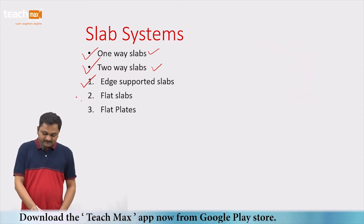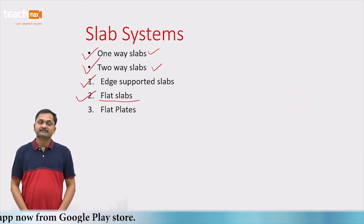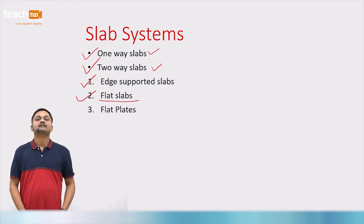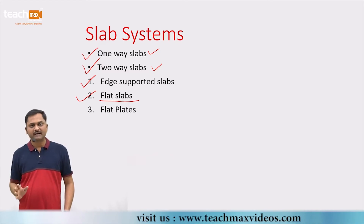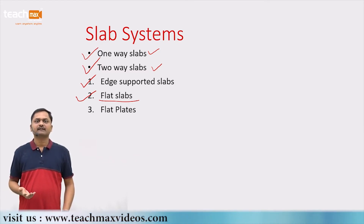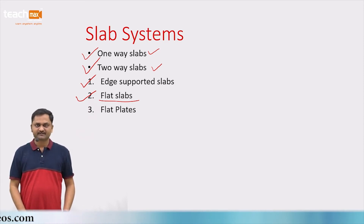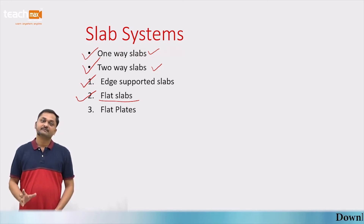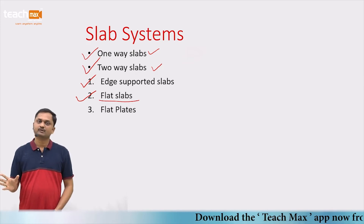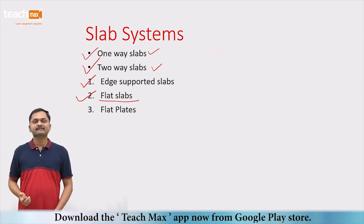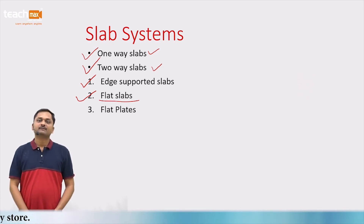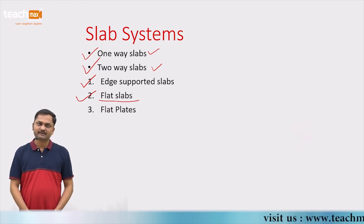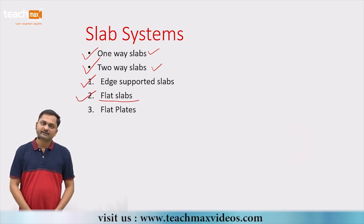Now we move to the design of flat slabs, which is different from the slab systems discussed so far. We need to understand what a flat slab is, along with its advantages and disadvantages. Flat slabs can be designed using reinforced cement concrete (RCC) as well as pre-stressed concrete. Our syllabus focuses on the design of pre-stressed two-way flat slabs. For analysis, we use the Direct Design Method (DDM) given in IS 456-2000, similar to how we used Table 26 for two-way edge-supported slabs.